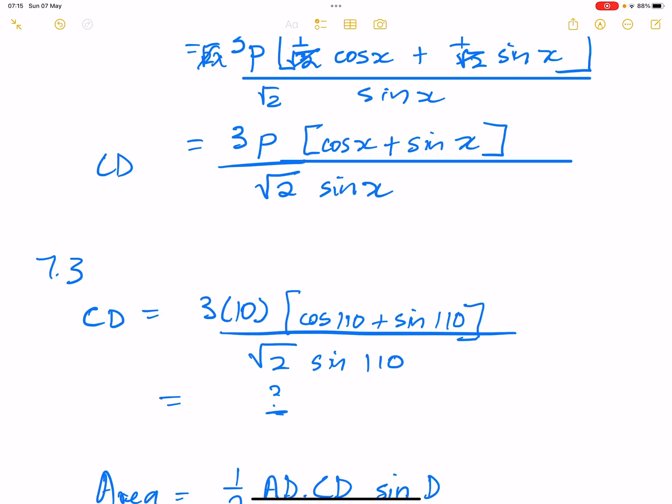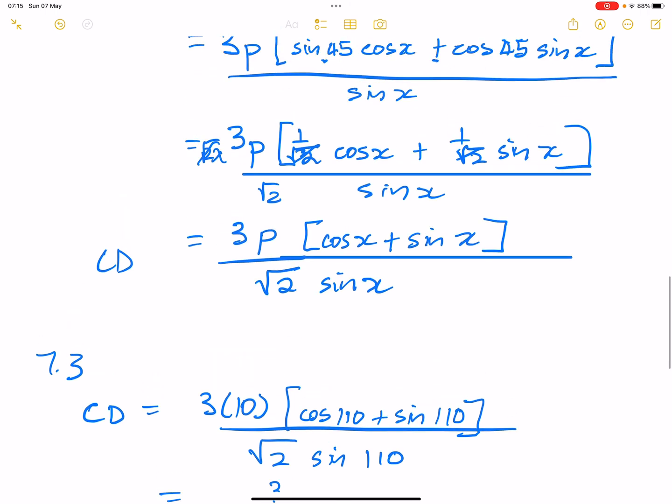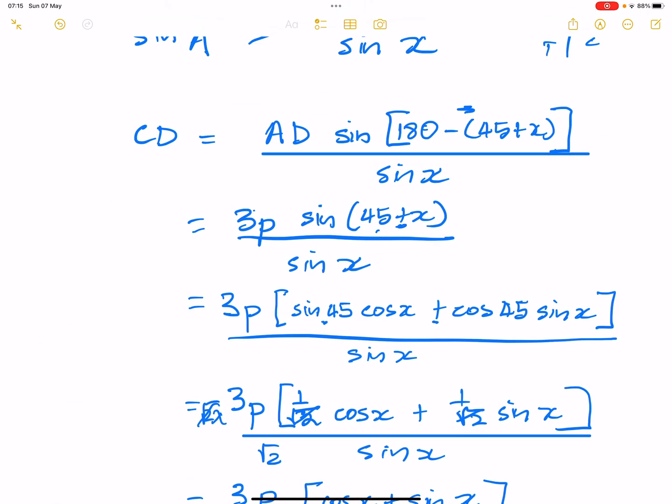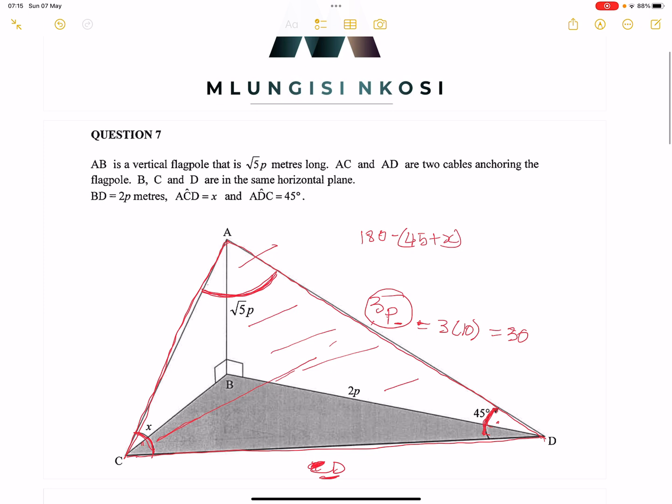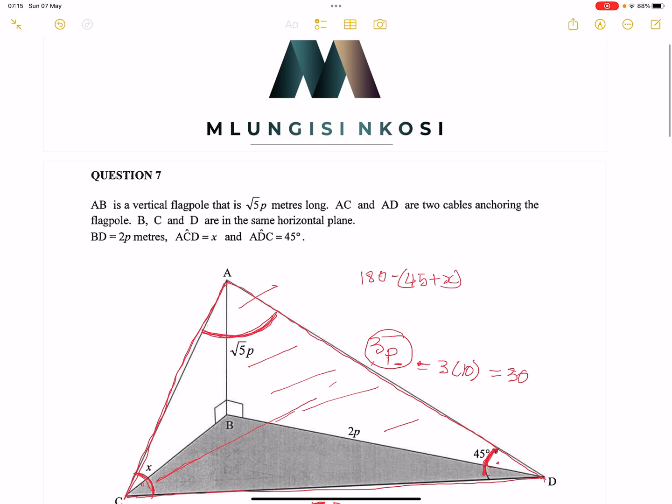And that is how the cookie crumbles, ladies and gents. Please remember, you always work on the triangle first that has the most information, and you find a common side. And in this case our common side was side AD. I hope that makes sense, ladies and gents, and we'll see each other again.